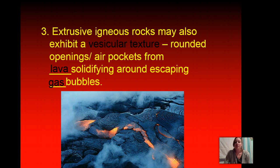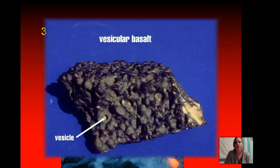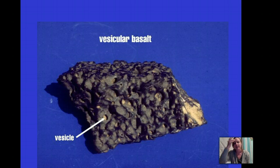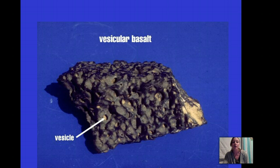Extrusive igneous rocks may also exhibit what's called a vesicular texture — these are rounded openings or air pockets formed from lava solidifying around an escaping gas bubble. So literally when lava gets gas bubbles in it, they form these little holes or pockets of air. Here's a picture of vesicular basalt. That is an extrusive igneous rock — if there are gas pockets and holes in it like this little gas pocket that the arrow is pointing to on your screen, then obviously it had to have been in contact with the air.